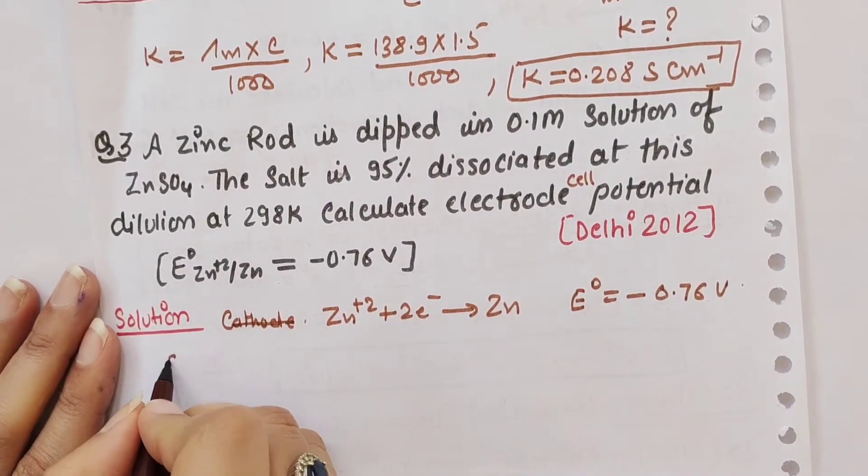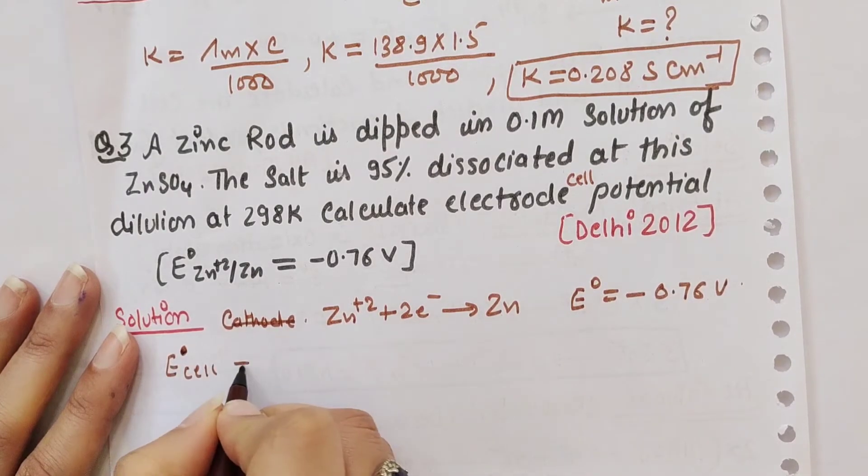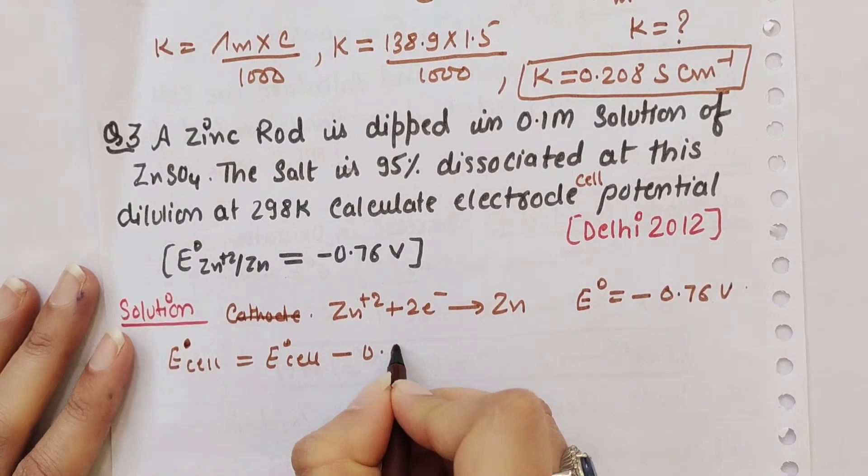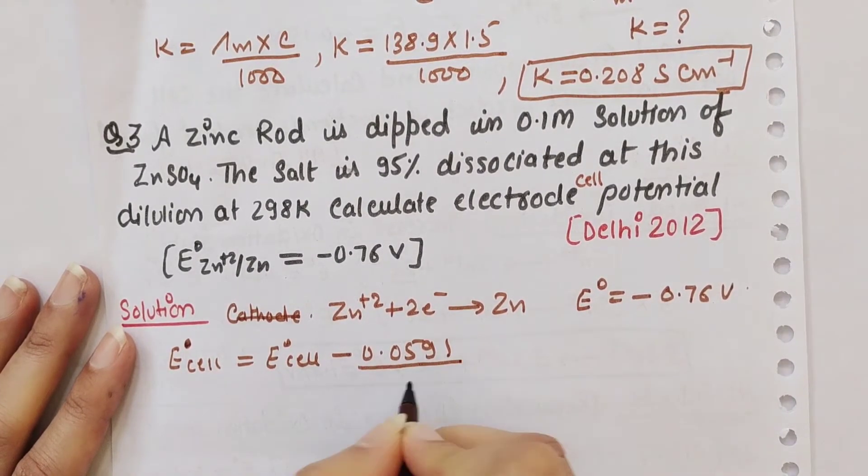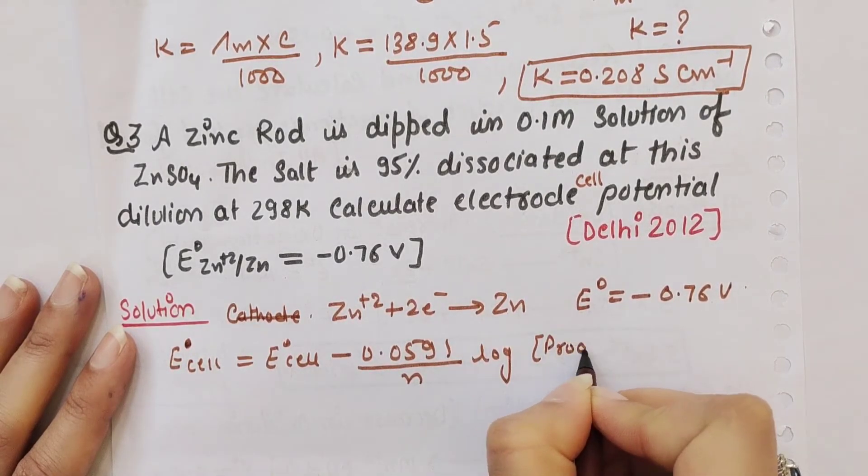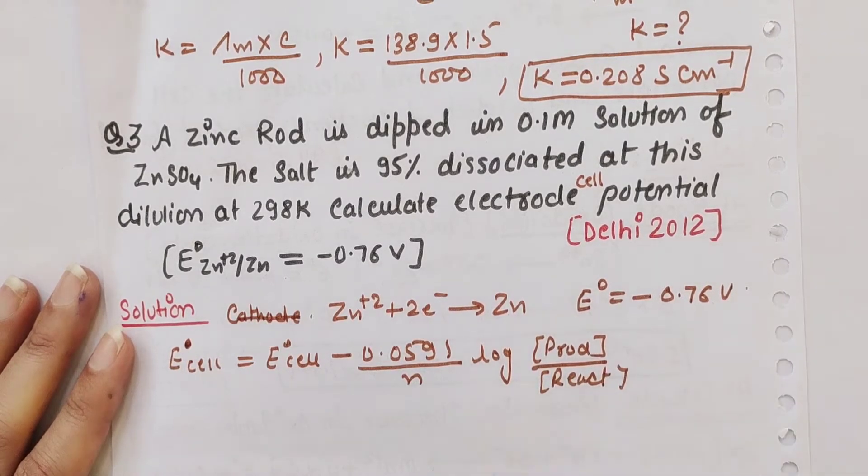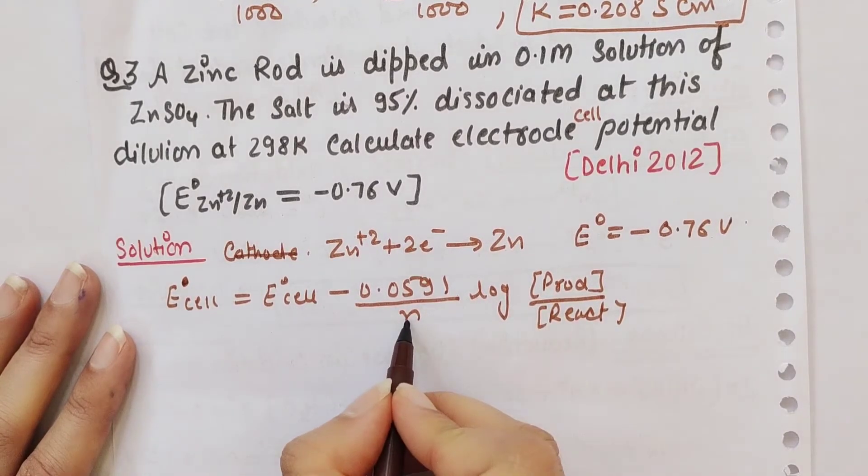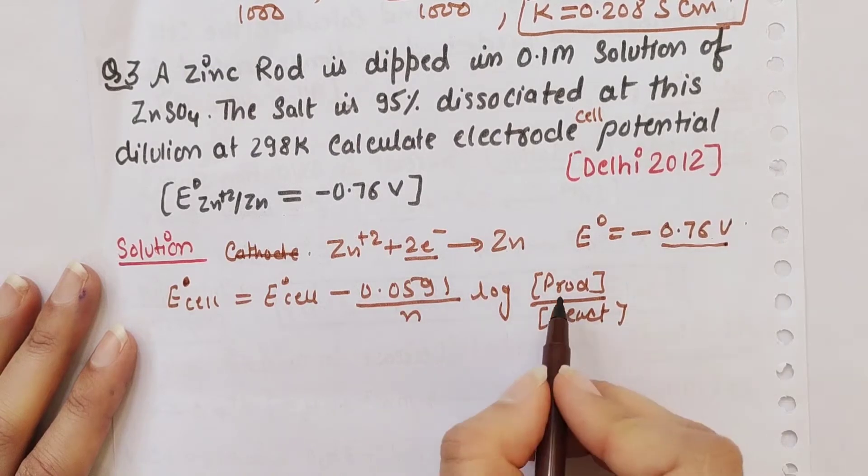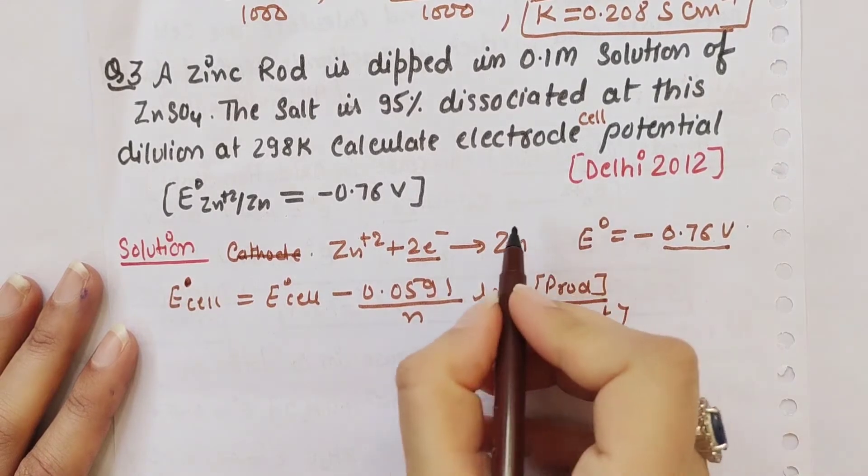To calculate electrode potential, we use the Nernst equation: E_cell = E° - 0.0591/n × log(product/reactant). Here n is the number of electrons, which is 2.